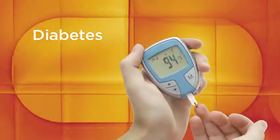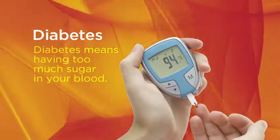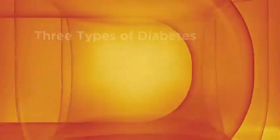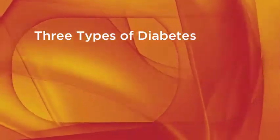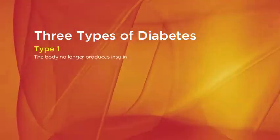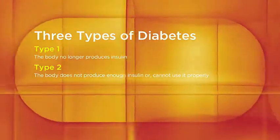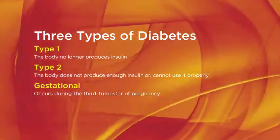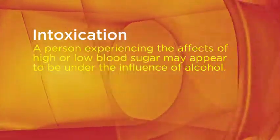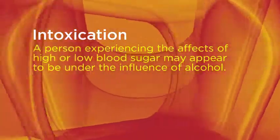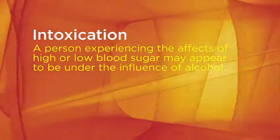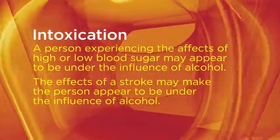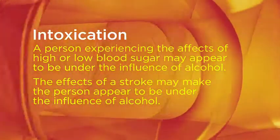What is diabetes? Diabetes means having too much sugar in your blood. There are three types of diabetes: type one, type two, and gestational. A person experiencing the effects of high or low blood sugar may appear to be under the influence of alcohol. Similarly, the effects of a stroke may make a person appear to be under the influence of alcohol.